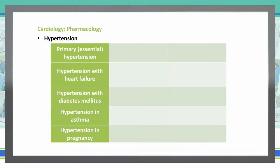We're specifically going to discuss primary hypertension, also known as essential hypertension, hypertension associated with heart failure, hypertension along with diabetes, hypertension with asthma, and hypertension during pregnancy.